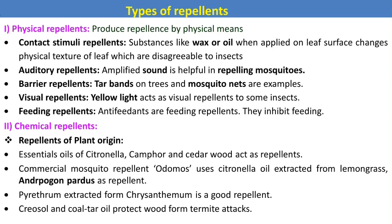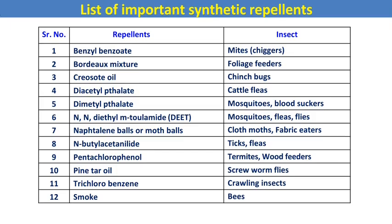Visual repellents use light to attract insects away. Chemical repellents of plant origin include oils such as citronella, camphor, and cedar, which act as repellents. The commercial mosquito repellent Odomos uses citronella oil extracted from lemongrass. A list of important synthetic repellents is also available in markets against different insect pest populations.